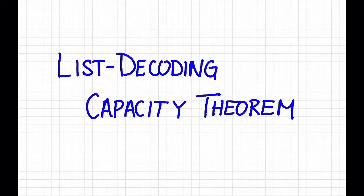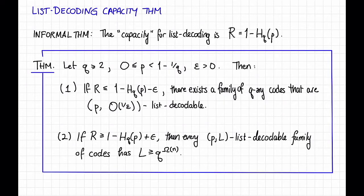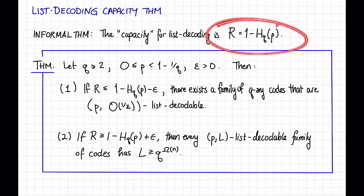In this video, we'll see the list decoding capacity theorem, which pins down the best trade-off between the rate r and the list decoding radius p for a list decodable code. Informally, the list decoding capacity theorem says that the capacity for list decoding — that is, the best possible trade-off between the rate r and the radius p — is r equals 1 minus the q-ary entropy of p.